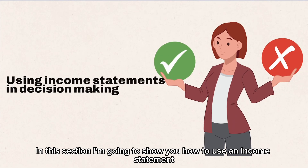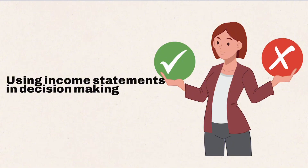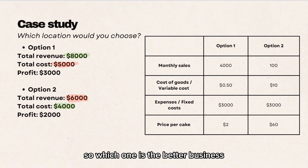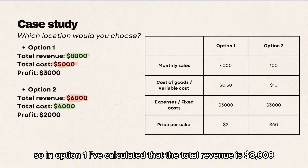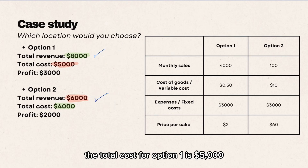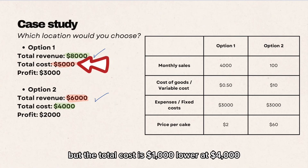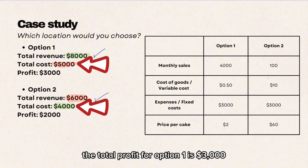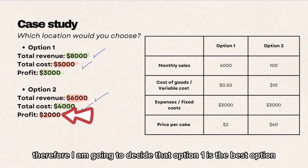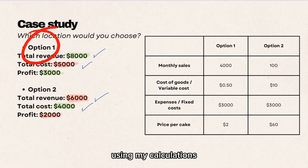Now I'm going to show you how to use an income statement to make a decision. In my example, I have option one and option two. Option one has total revenue of $8,000 and total costs of $5,000, giving a profit of $3,000. Option two has total revenue of $6,000 and total costs of $4,000, giving a profit of $2,000. Therefore, option one is the better business as it generates $1,000 more profit.